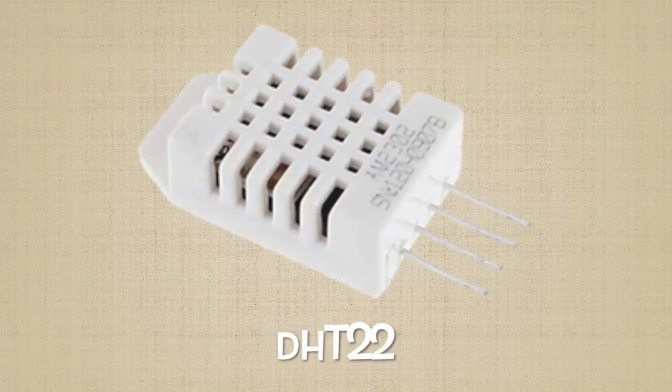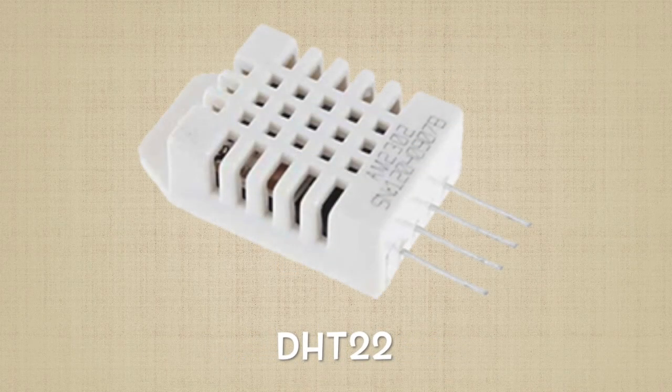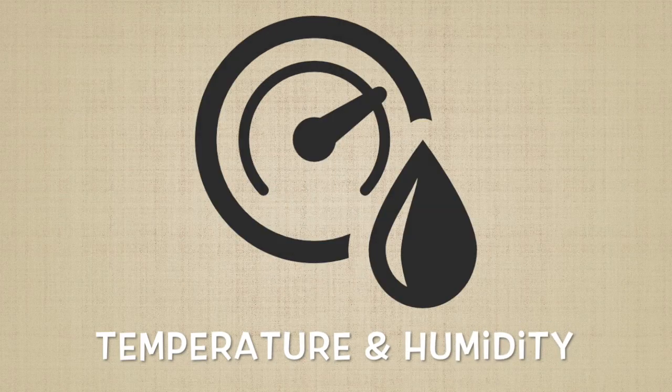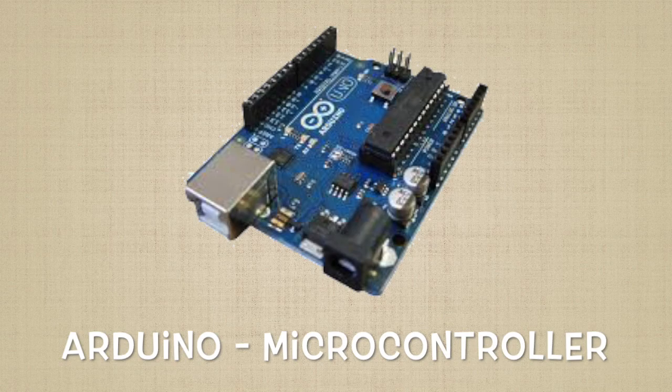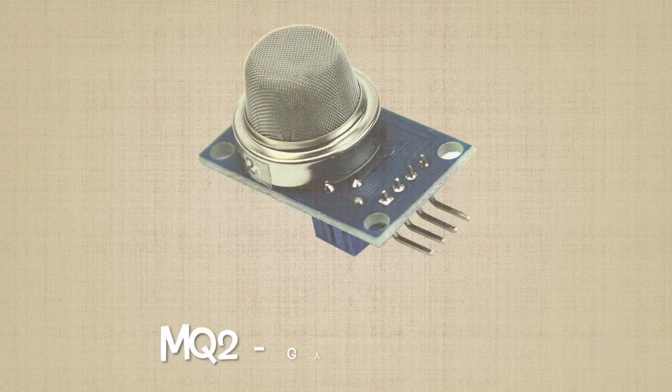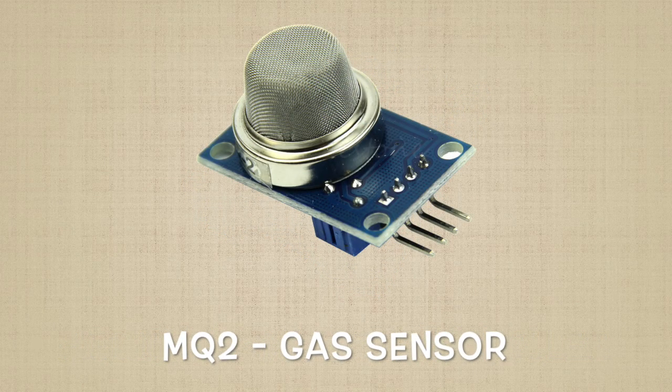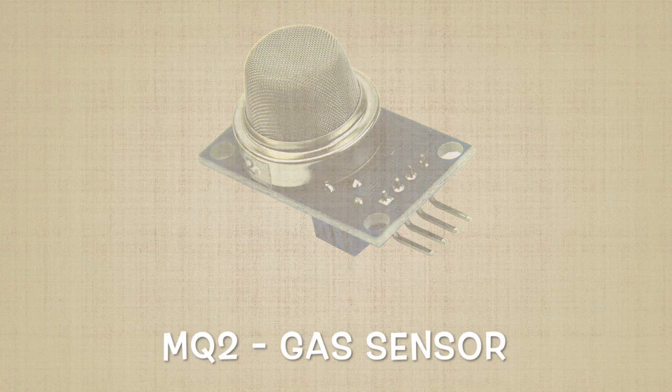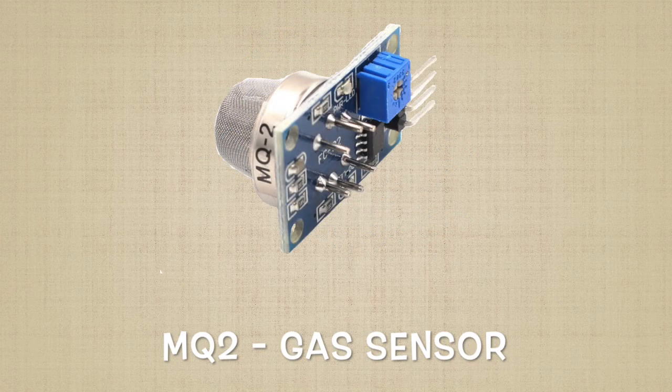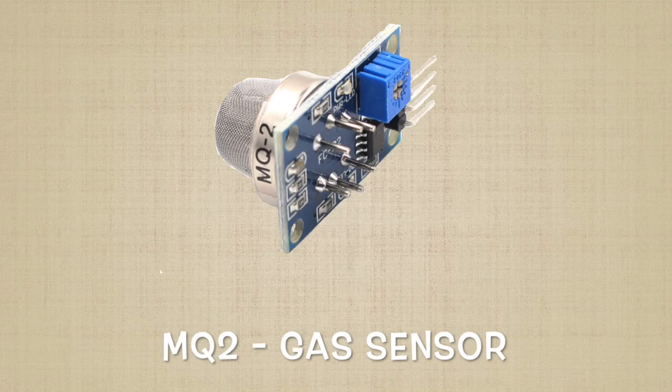The DHT22 is a basic, low-cost digital temperature and humidity sensor. The digital signal is easy to read using any microcontroller. Next, let's introduce the MQ2 Gas Quality Sensor. This module is useful for gas leakage detection and is suitable for detecting all kinds of gases. Due to its sensitivity and fast response time, measurements can be taken as soon as possible.